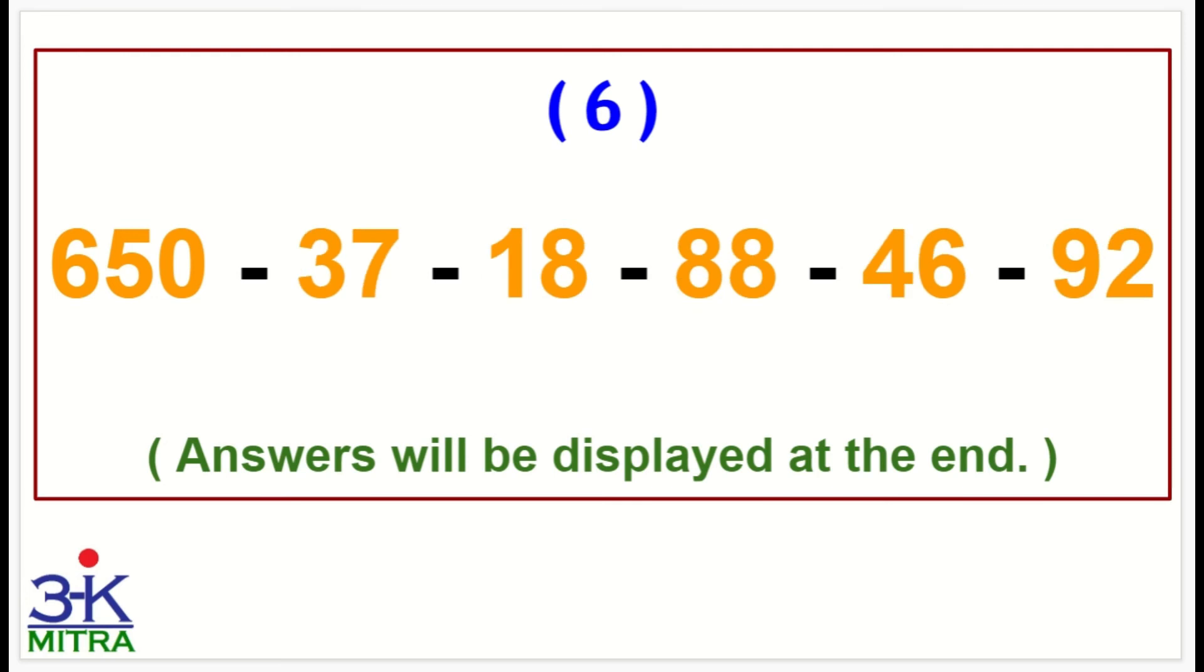Let's move to the next sum, sixth one now. Again, 650 as our starting number, then minus 37, minus 18, minus 88, minus 46, minus 92. That is, write down the answer.